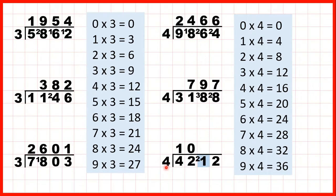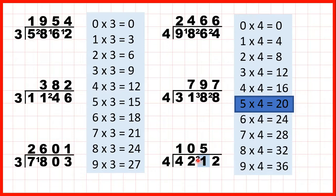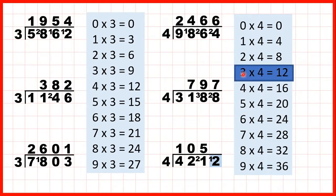Now 21 divided by 4. We're looking for a number in the 4 times table that's as close to 21 as possible, but not more than 21. That's 20, which is 5 times 4. So because it's 5 times 4, the 5 goes in our answer line. But 5 times 4 is only 20 and we have 21. To get to 21 from 20 we count on 1, so that 1 is our remainder. So finally we have 12 divided by 4. 12 is in the 4 times table — that's exactly 3 times 4. So 3 is the last digit of our answer. 1,053.